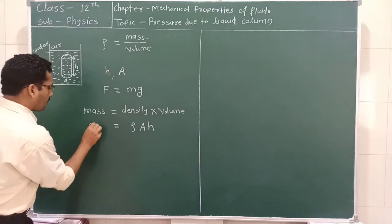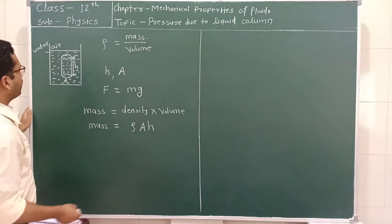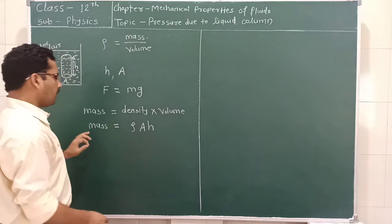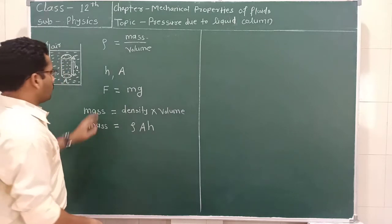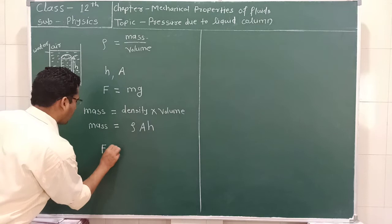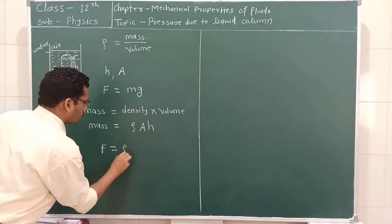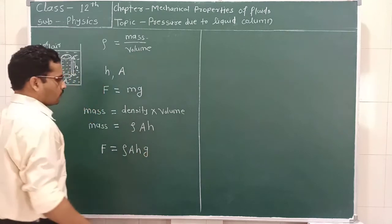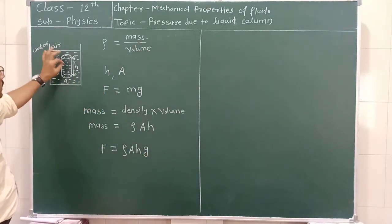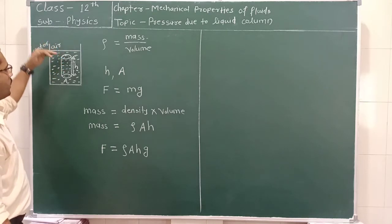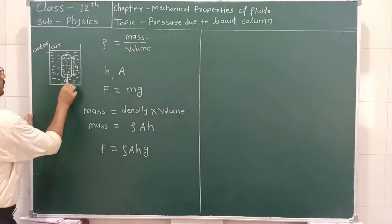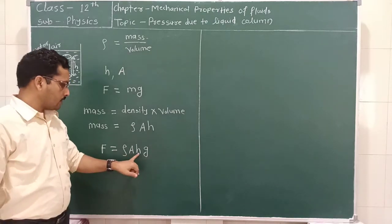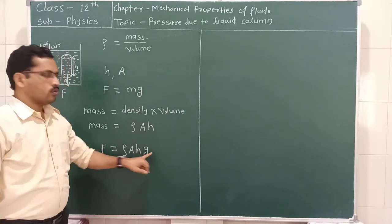So mass equals rho multiplied by A into H. Therefore the force acting on this imaginary cylinder in the downward direction is F equal to rho times A times H times g.